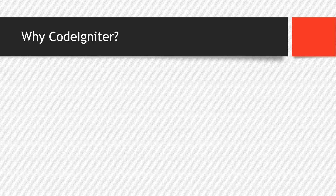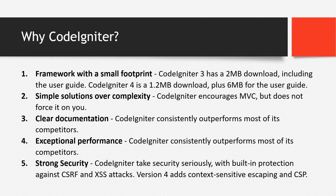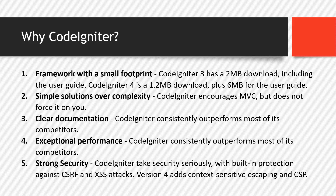So why CodeIgniter? There are 10 reasons to use CodeIgniter. First, it is a framework with a small footprint — CodeIgniter 3 has a 2MB download including the user guide, and CodeIgniter 4 is a 1.2MB download plus 6MB for the user guide. Compared to other PHP frameworks, CodeIgniter requires significantly fewer resources. The second reason is simple solutions over complexity — CodeIgniter encourages MVC but does not force it on you.